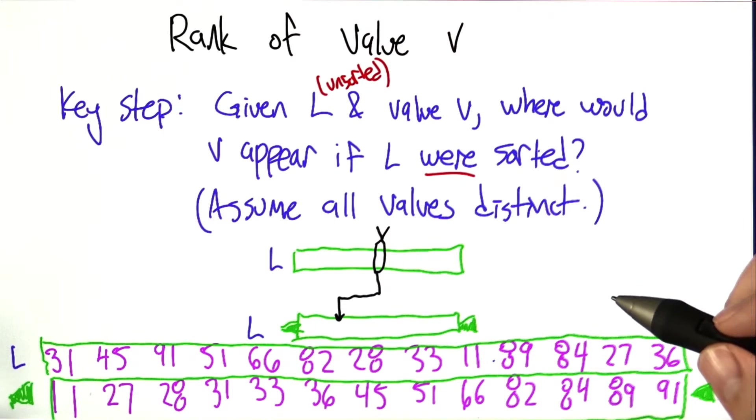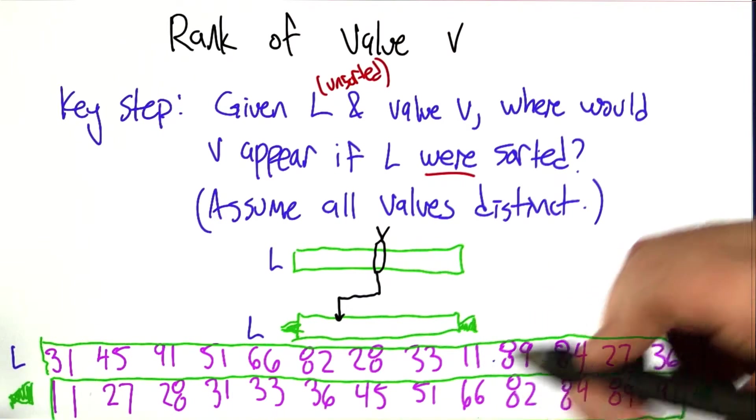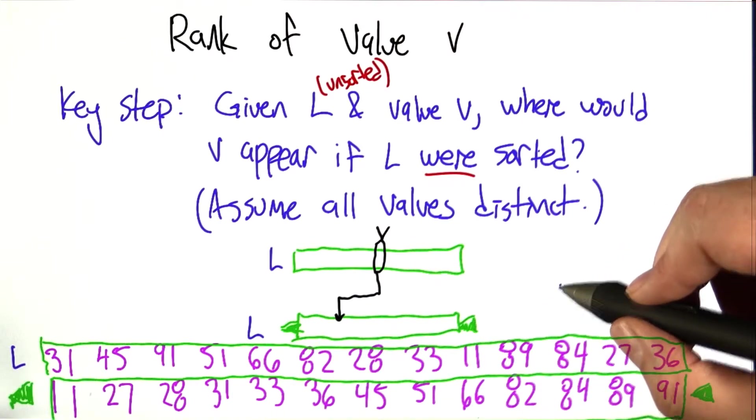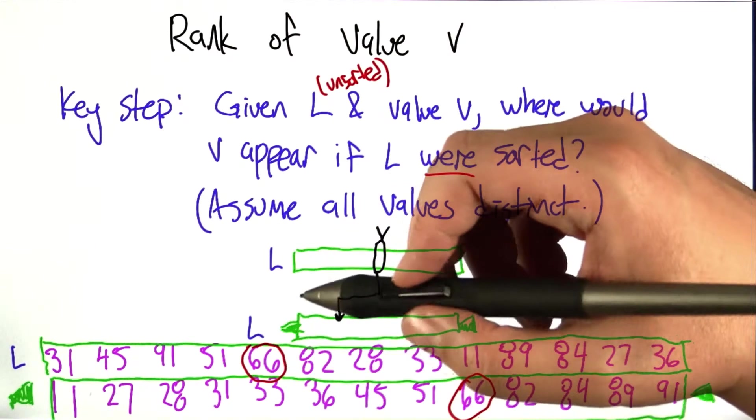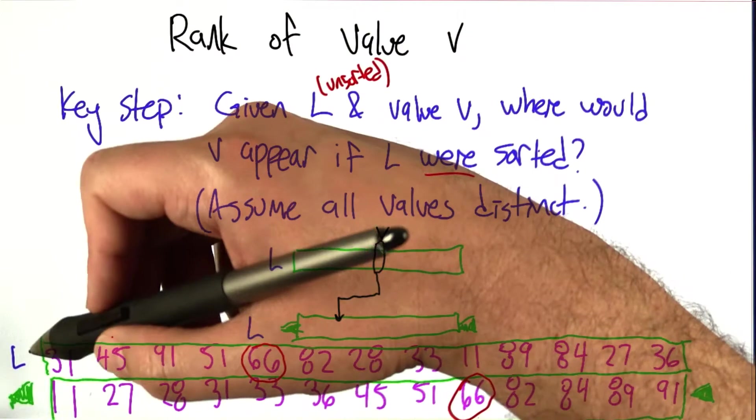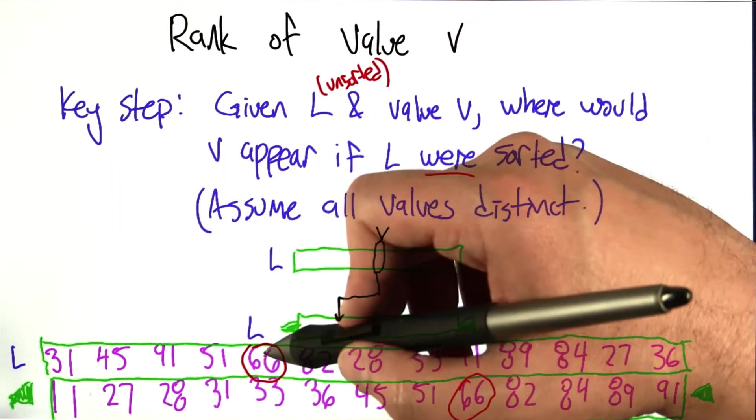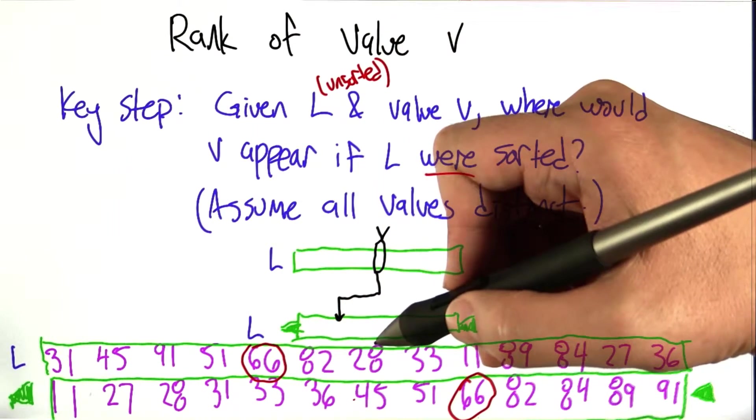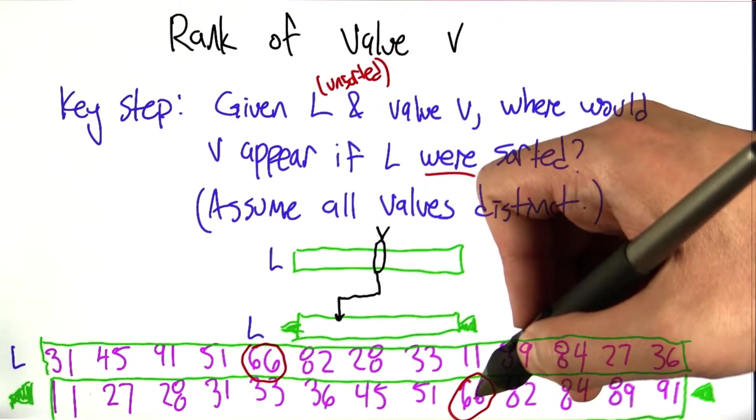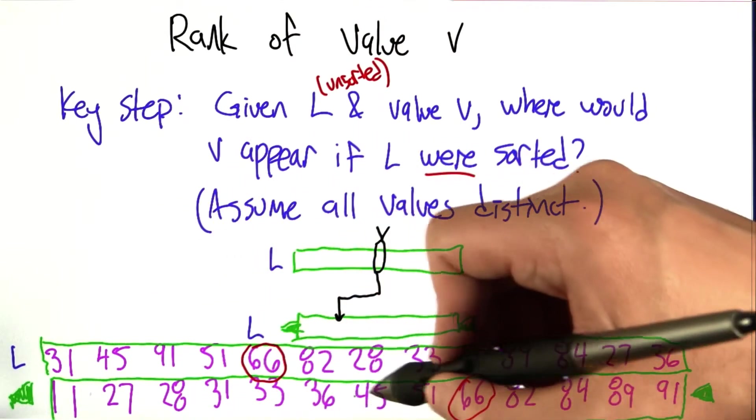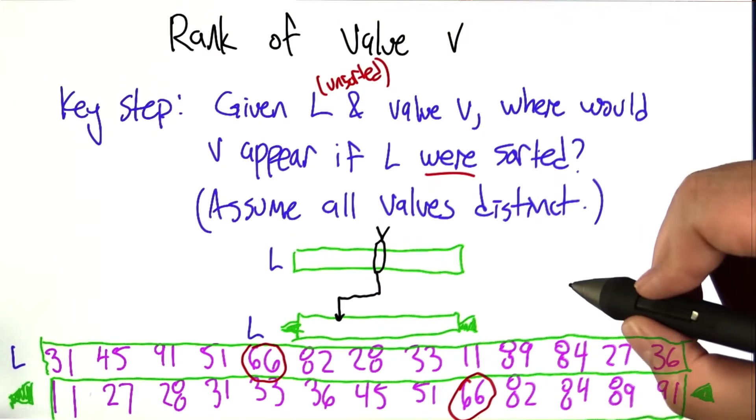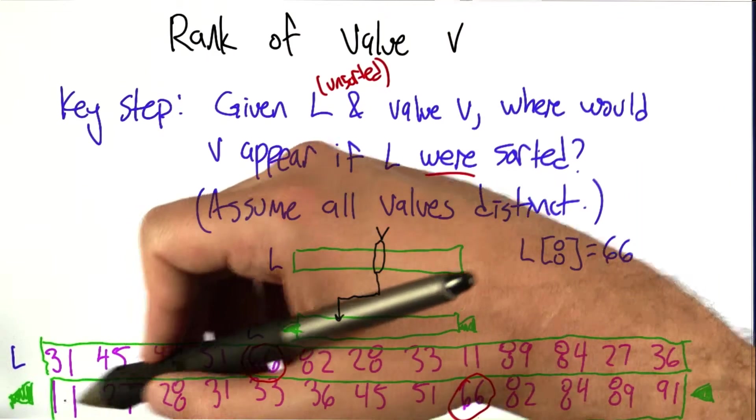And let's consider the number 66, say. So here's 66 in the original list. How can we figure out, just by scanning through L, where 66 is going to end up in this list? Well, what makes it end up there? It's in position what? 0, 1, 2, 3, 4, 5, 6, 7, 8. It's in position 8.